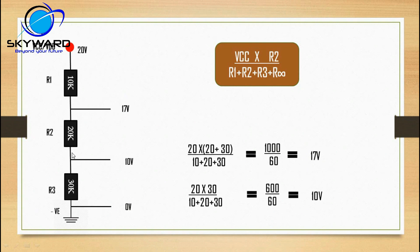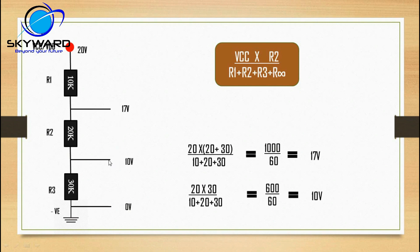To find the voltage at the junction between 20k and 30k, treat that node as the new reference: R1 becomes 10k+20k and R2 becomes 30k. Using the formula you get 10 volt. The voltage at ground is 0 volt. The voltage differences across each resistor add up: 3V across 10k, 7V across 20k, and 10V across 30k, totaling 20V.